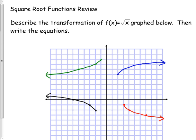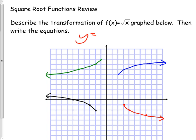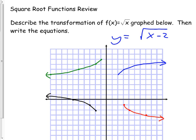Now they give you a moved graph and you have to back up and figure out the equation. The blue one is fairly easy - it's just been moved right with no flipping. The parent function is square root, so: y equals square root of the quantity x minus two, then plus five. Minus two makes it move right two, plus five moves it up five.